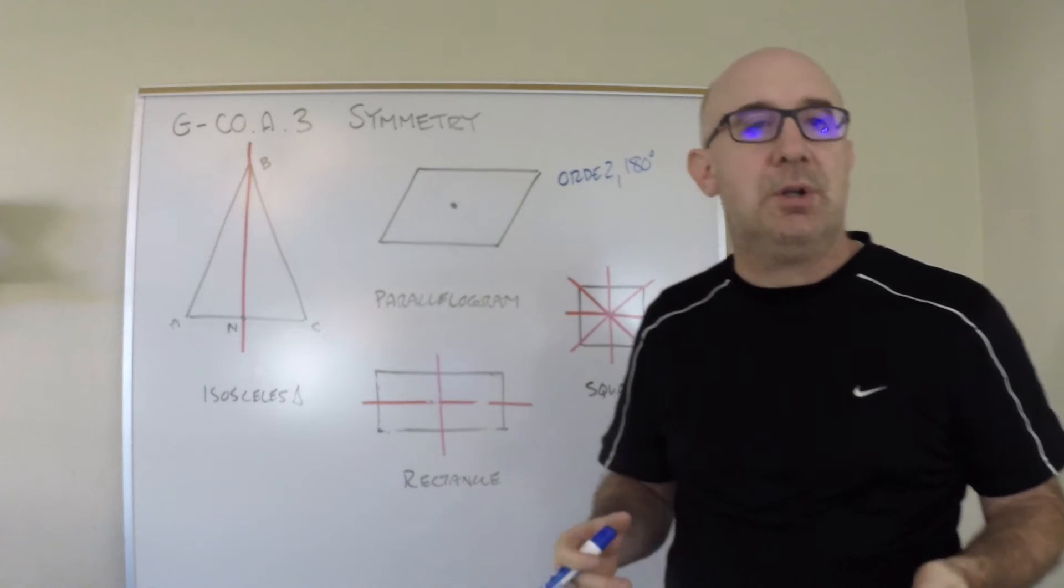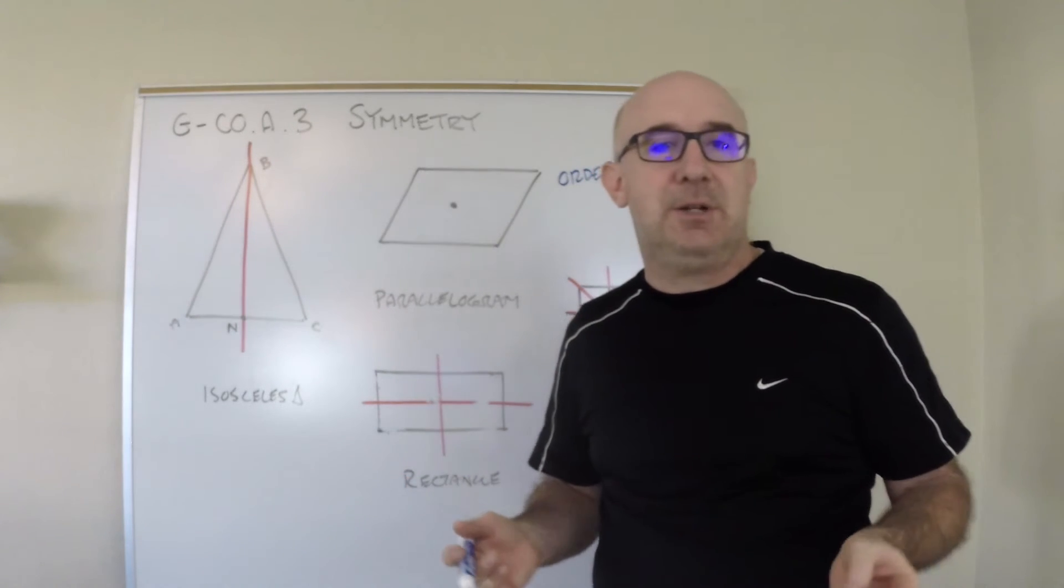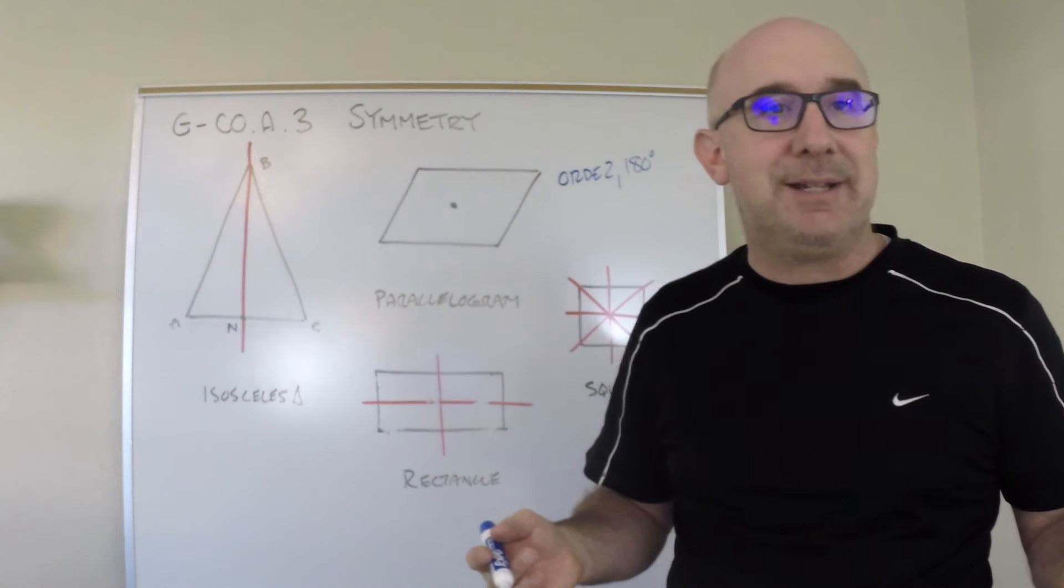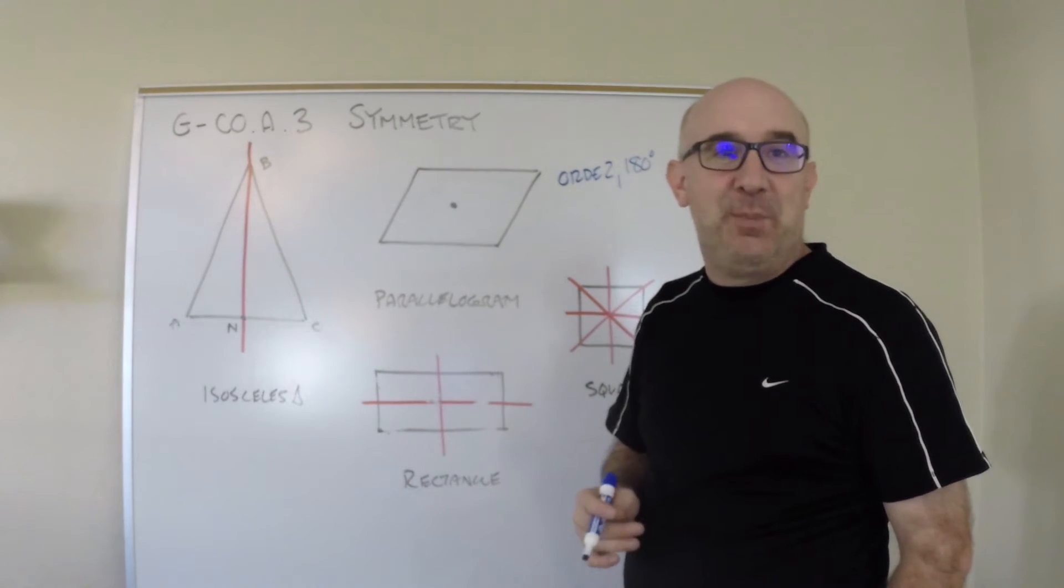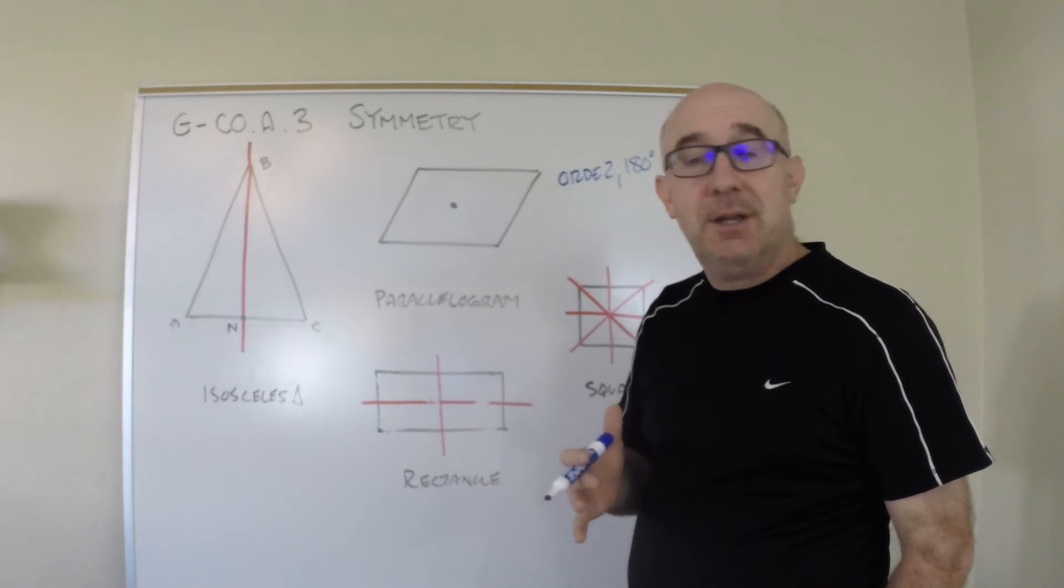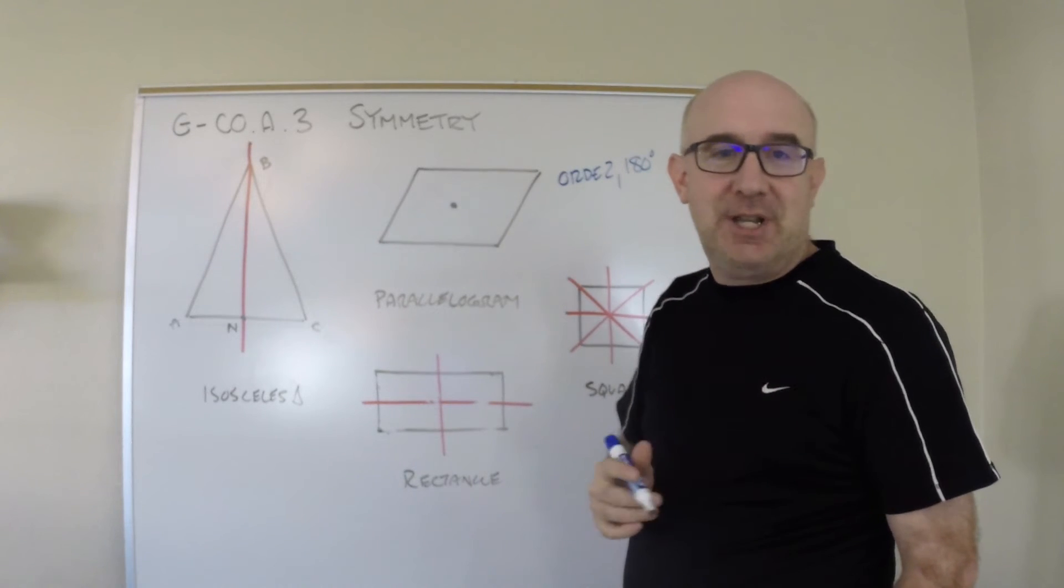Opposite angles equal, opposite sides are equal, diagonals bisect each other, and so on. Those actually can all be established using our friend symmetry. Watch this.